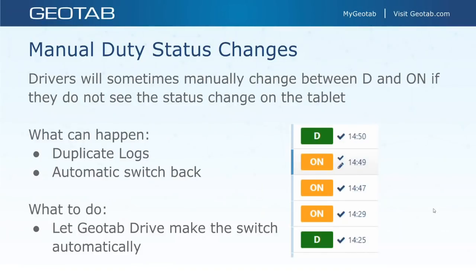What can happen if someone manually changes status? One is that you may get duplicate logs — three on-duty statuses in a row when there should just be one automatic one. Another thing is an automatic switchback: if someone stops and hits on, they may be switched back into drive automatically. The key takeaway is that you need to let Geotab Drive make that switch automatically. It's just important that we let the app do its thing.